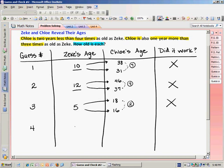Guess 4. Maybe I would try that Zeke is 3. If Zeke is 3, according to the first clue, 3 times 4 is 12, minus 2 would tell me that Chloe is 10. And then the second clue, 3 times 3 is 9, plus 1 is 10. Notice we have now got 10 for both clues and telling us that Chloe's age is 10. So did my guess of Zeke's age work? It did.